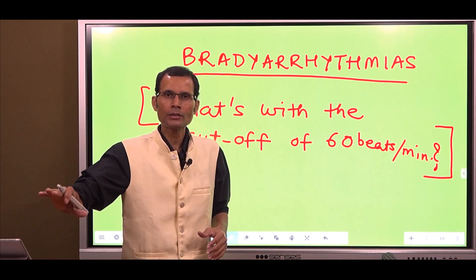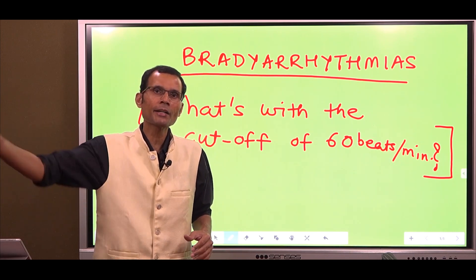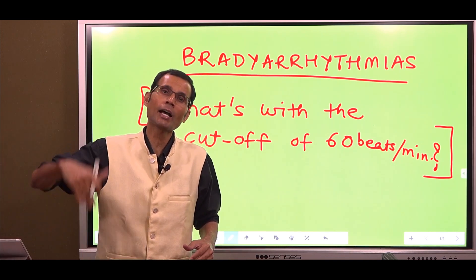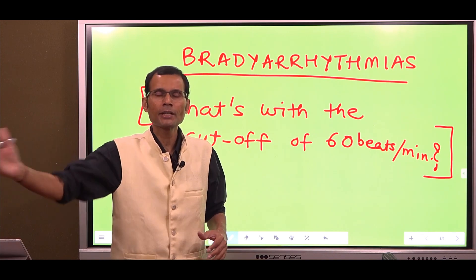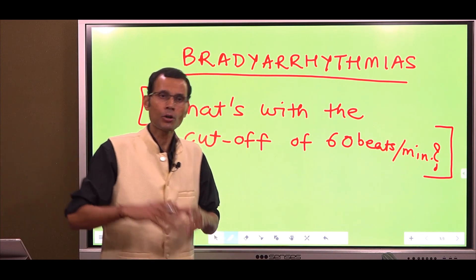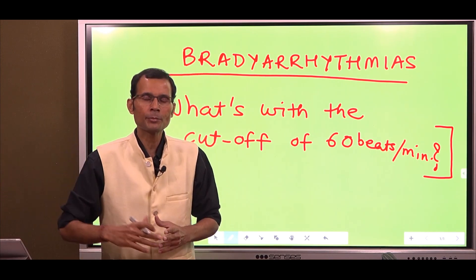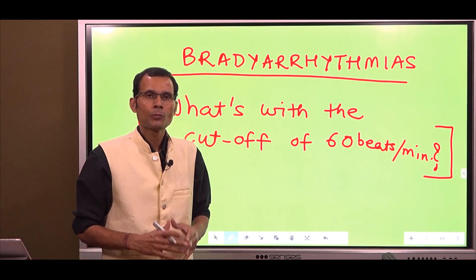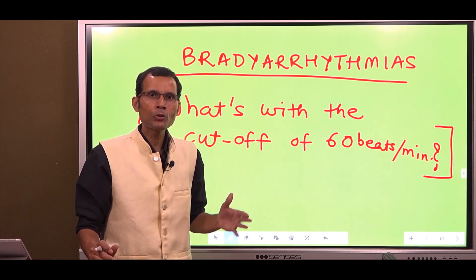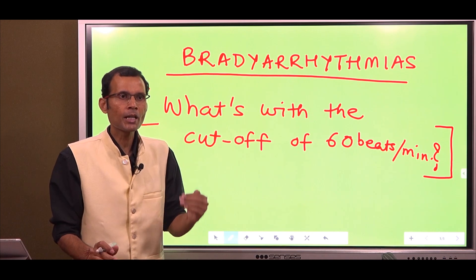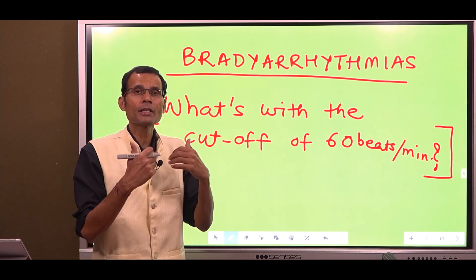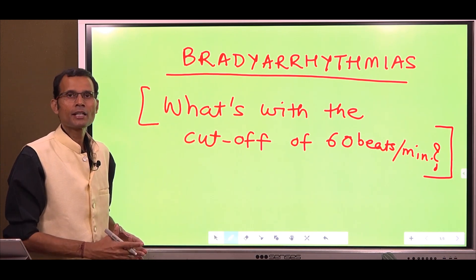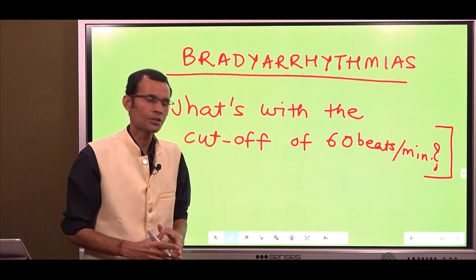We often read more about tachycardia arrhythmias — flutter, fibrillation — where high heart rates result in arrhythmias or are present along with arrhythmias. But what about the bradyarrhythmias? When the heart rate is below 60, why does it have arrhythmogenic potential? Let's understand this now with this small discussion.